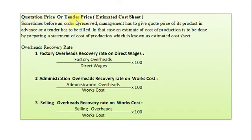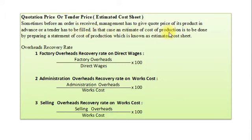Quotation Price, Tender Price, or Estimated Cost Sheet — sometimes before an order is received, management has to give a quoted price of its product. We call it a quotation in advance, or a tender has to be filled. In that case, an estimate of cost of production is done by preparing a statement of cost, known as an estimated cost sheet or quotation.